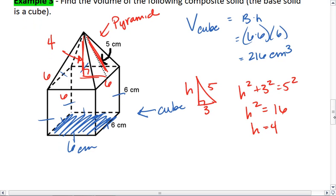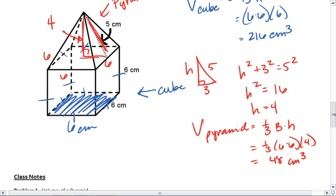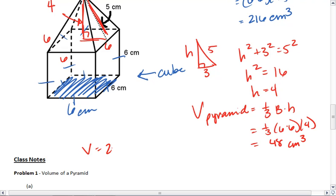Then the volume of this pyramid is one-third base times height. So one-third of 6 times 6 times 4, I get 36 times 4 times one-third gives me a volume of 48 centimeters cubed. So my total volume is 216 plus 48, which gives me 264 centimeters cubed.